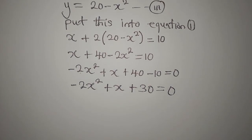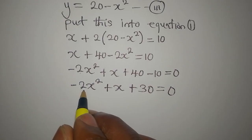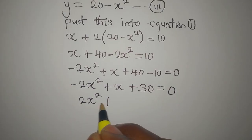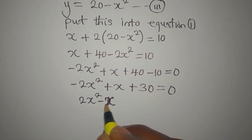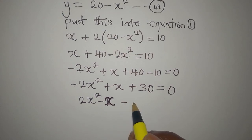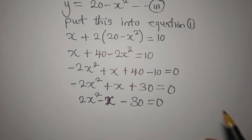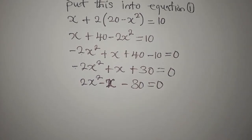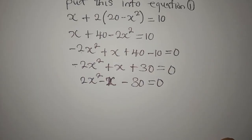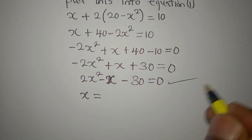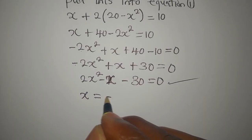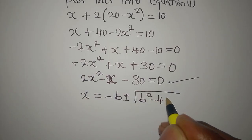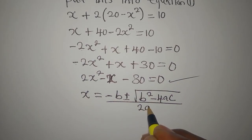Now, I have to multiply both sides by negative 1 so that this will become 2x squared. This will turn to negative x and this will turn to negative 30, then we have 0. Now we want to solve this quadratic equation using the formula method: x equals minus b plus or minus the square root of b squared minus 4ac, all over 2 times a.